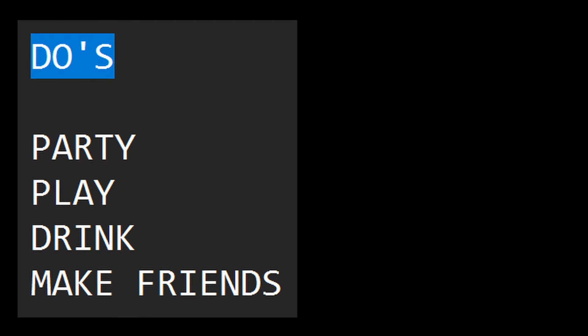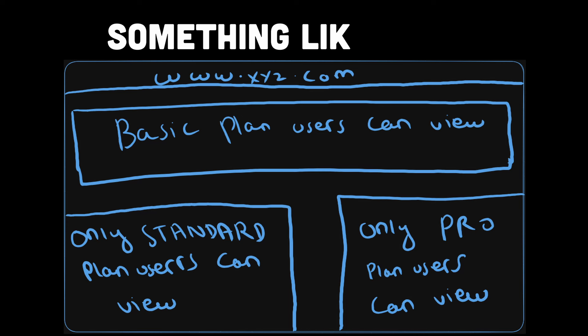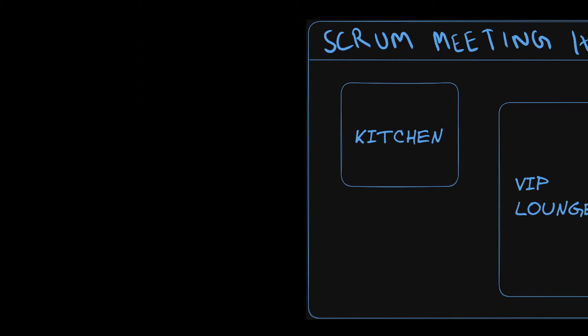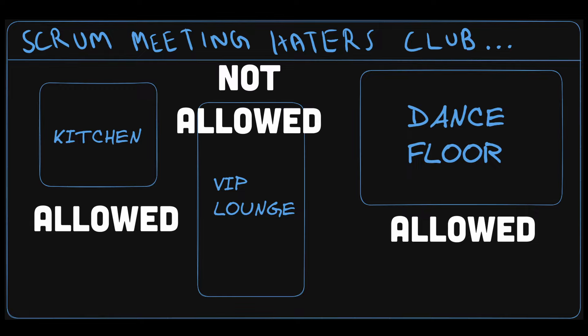It's like the club's rules that specify which areas are off limits or what activities you can participate in once you're inside. The backend server, acting as the club's rule enforcer, checks your authenticated identity and looks at your access permissions. It decides what you can or cannot do within the website or app based on your role or level of authority. For example, imagine the club has different areas like the dance floor, VIP lounge, and kitchen. Authorization ensures that only certain members have access to specific areas. The bouncer, based on your membership level or role, will allow you into certain sections and restrict access to others.